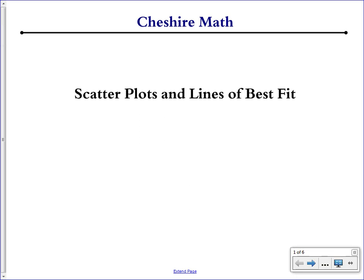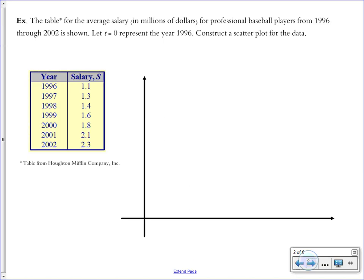This video is about scatter plots and lines of best fit. The table shows the average salary in millions of dollars for professional baseball players from 1996 through 2002. Let t equals 0 represent the year 1996.